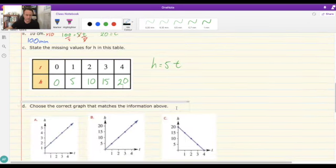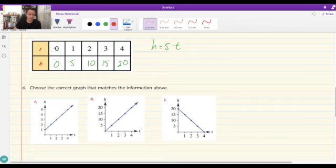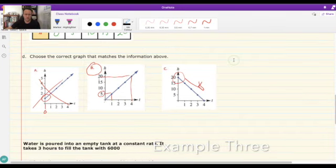Last of all, choose the correct graph that matches the information. We can see that first thing we notice is that because after 0 days, the plant was 0 in height, it can't be after 0 days 1. So it can't be A. This one, same deal, 0 days, 20 mil, and it's going down. So that leaves a fairly obvious choice in B. Starts off at 0 and then goes up. For every 1 day, we get 5 mil of growth. So we can see that lining up there. And if we go out to a 4, we get 4 lining up with 20 as well.